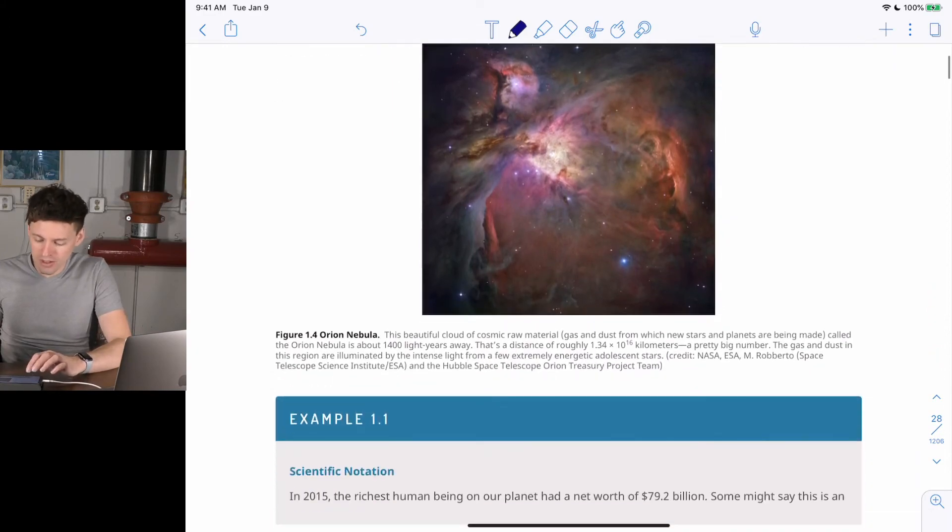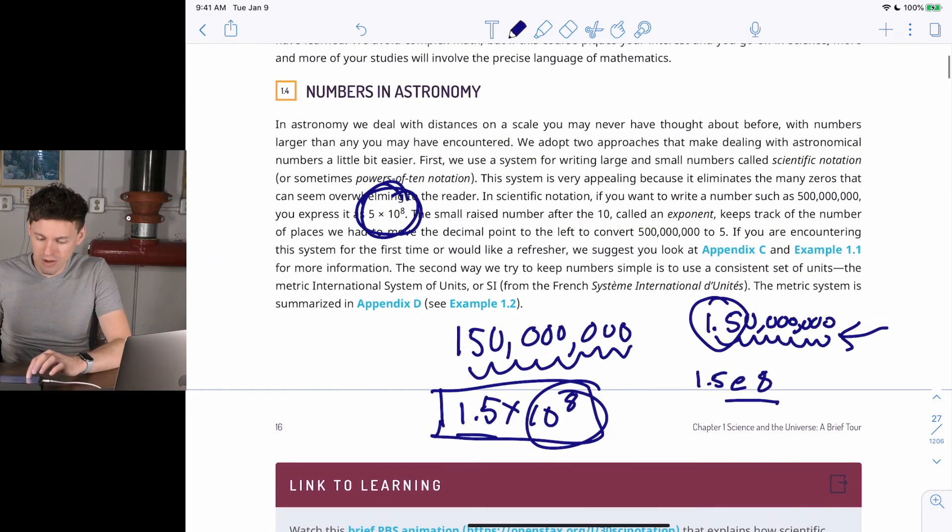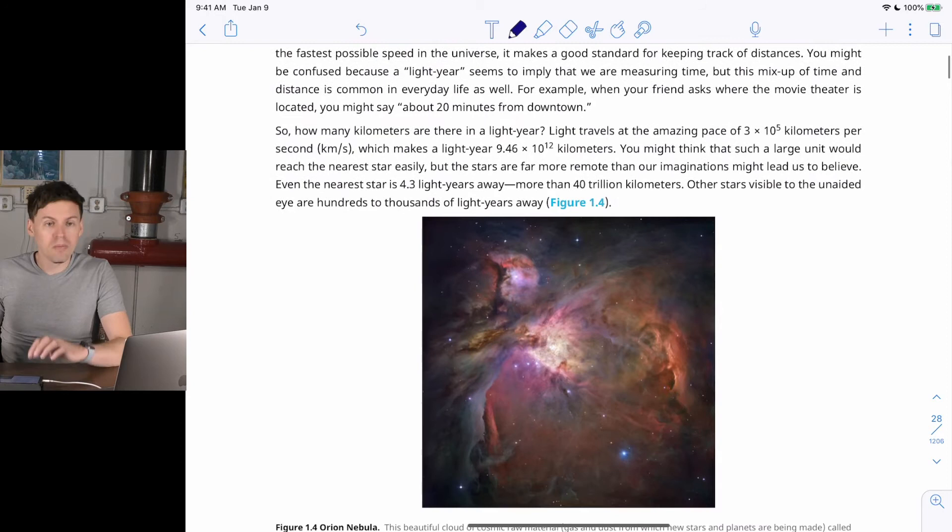So another unit that we're going to talk about, numbers in astronomy, we measure distances using something called the light year. The light year is a distance. The light year is the distance that light travels in one year.